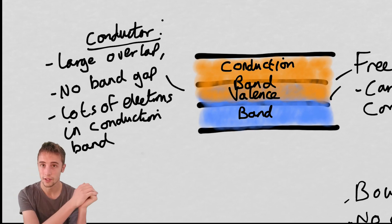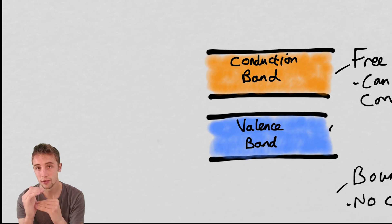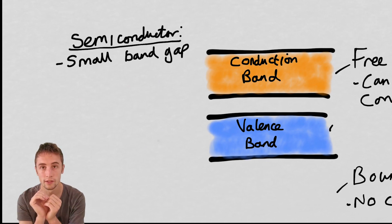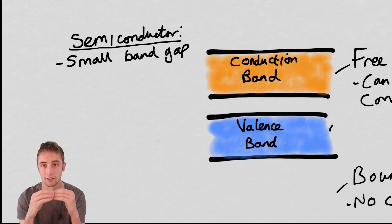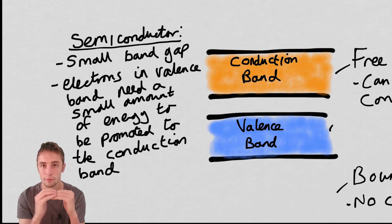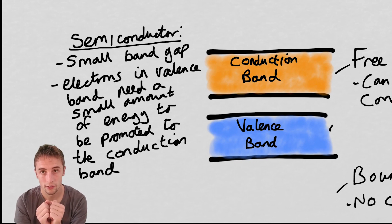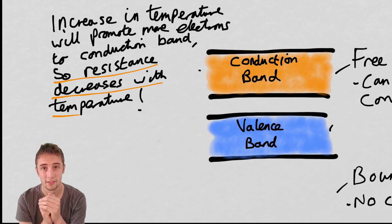In a semiconductor, this band gap is still there but very, very small compared to an insulator. This means that even just the ambient room temperature will give these electrons enough energy to jump from the valence band into the conduction band. So there are actually already some electrons in the conduction band able to take part in conduction — albeit less than in a conductor, but a lot more than in an insulator.